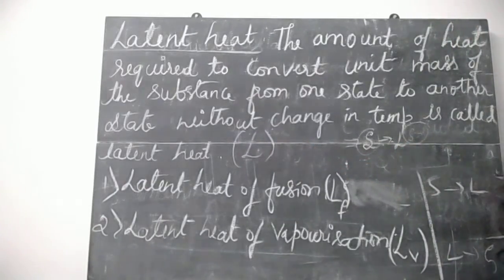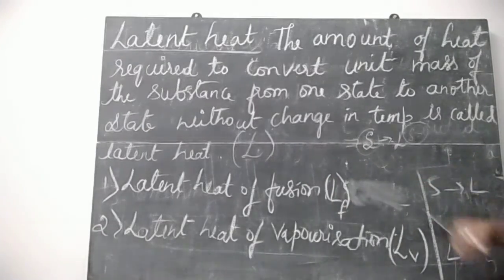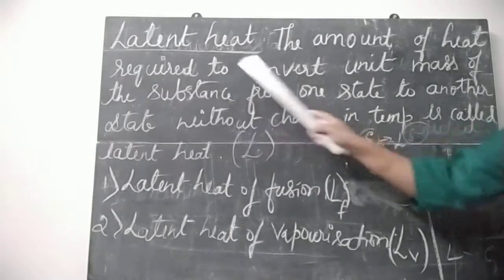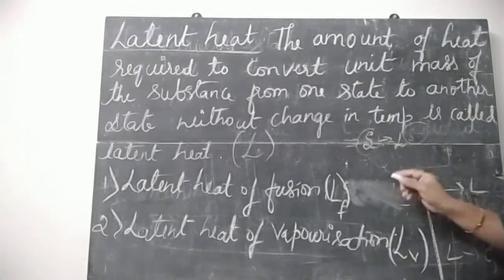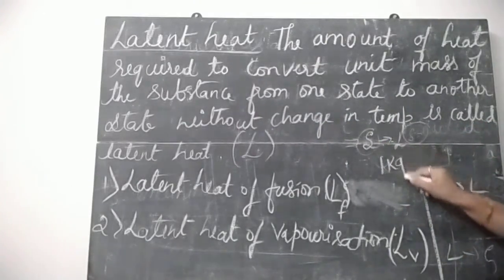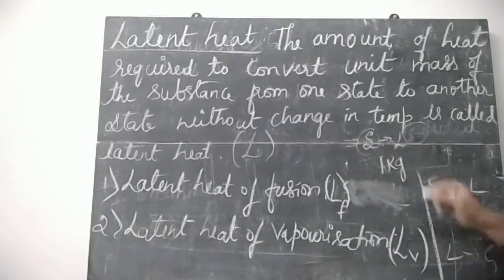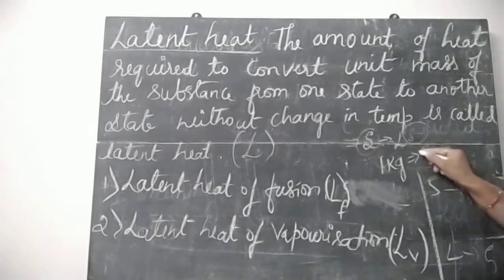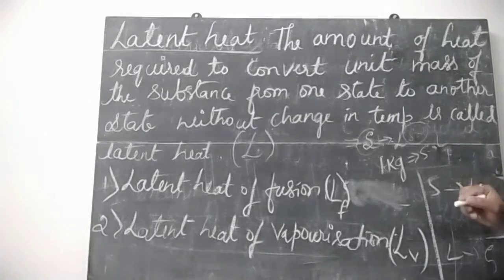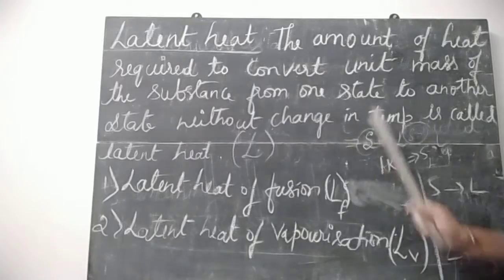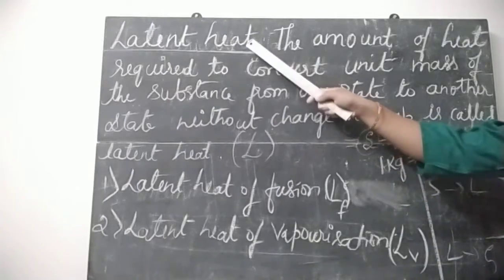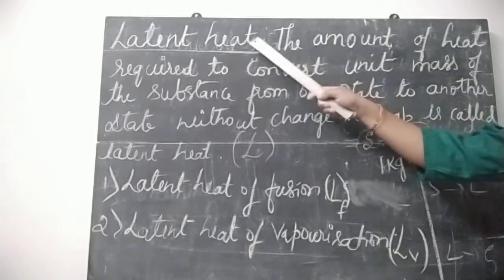Latent heat is denoted by capital L. The amount of heat required to convert unit mass — just like unit mass is 1 kg — from solid to liquid state, or from liquid to gaseous state, that amount of heat energy is called latent heat.